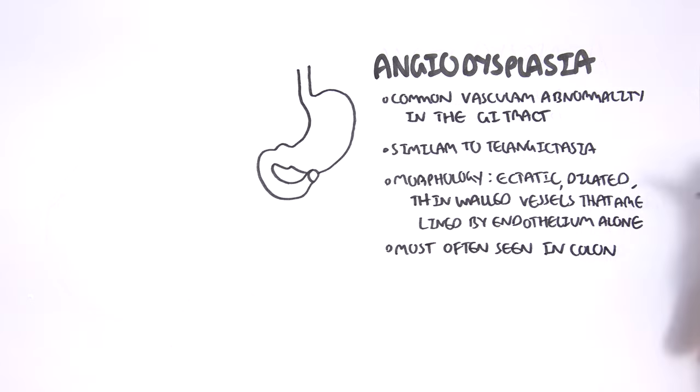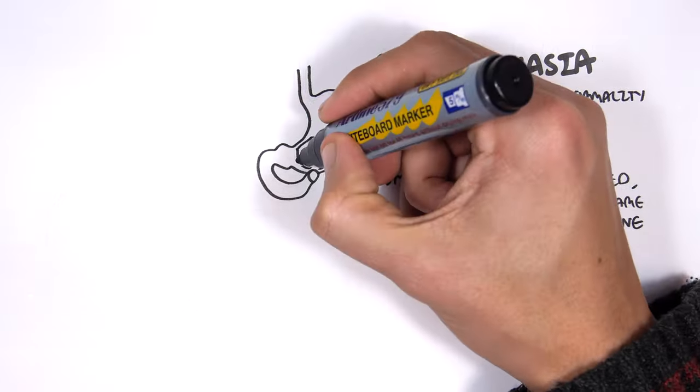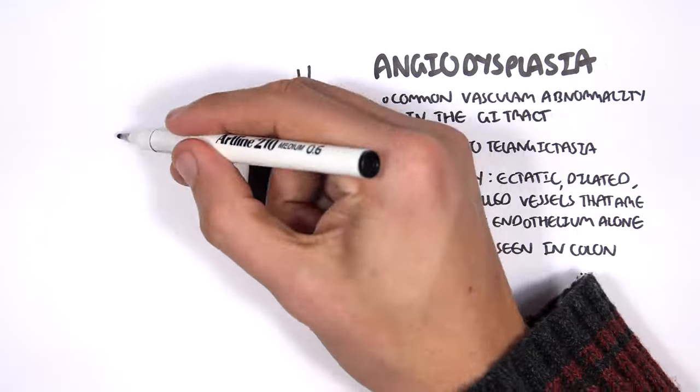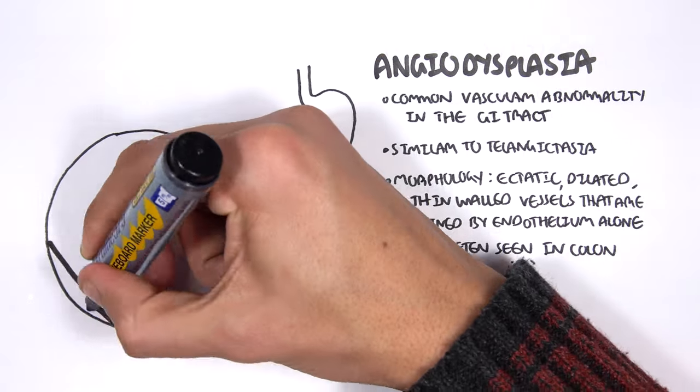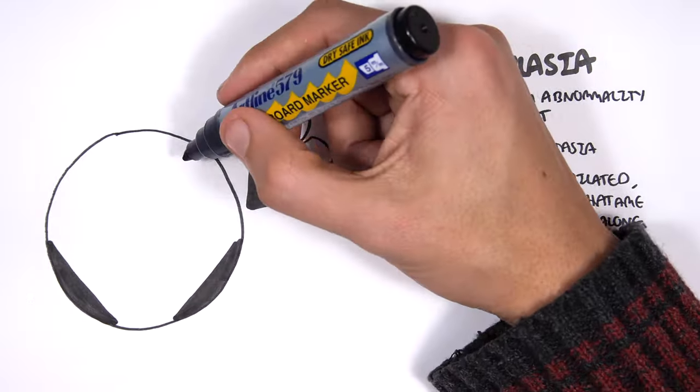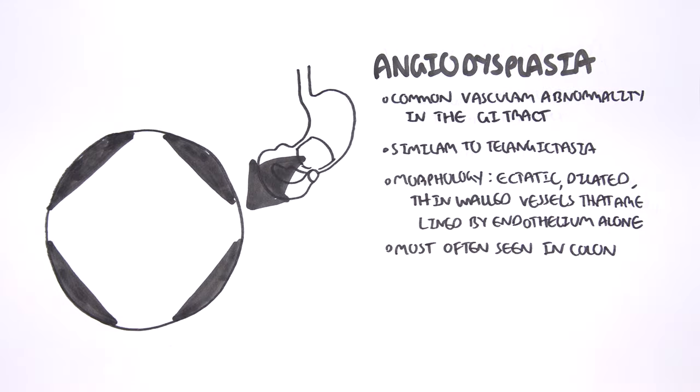But we can also see it in the stomach. If we were to look into the stomach using an endoscope, we would see potentially angiodysplasia, such as this.